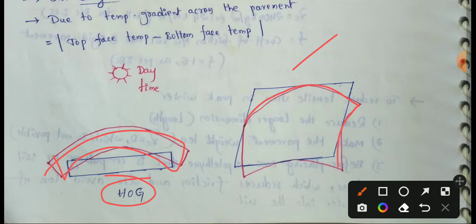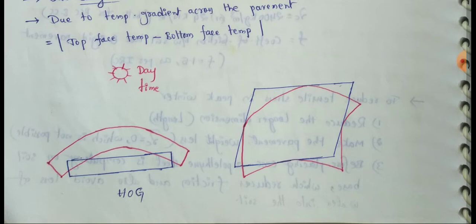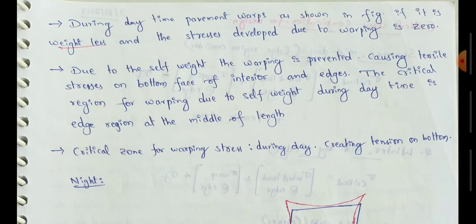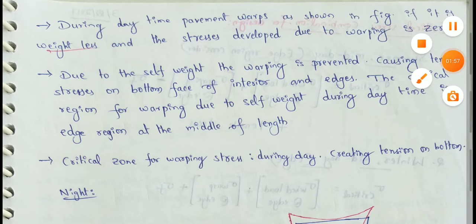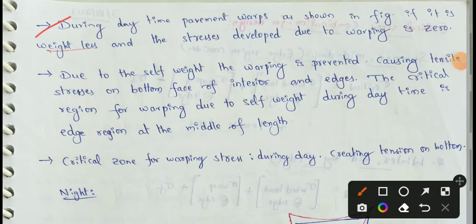In day time, you can see the rigid pavement in this shape — you can see a small bowl on top. You can see the warping stresses in day time. During day time, the pavement warps as shown in the figure. If it is weightless, stress developed due to warping is zero.